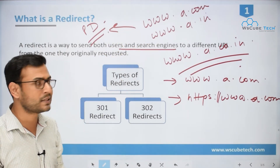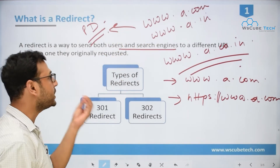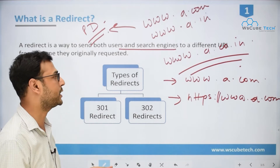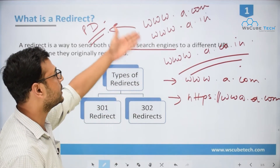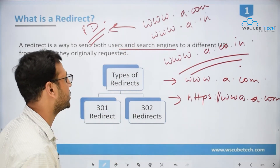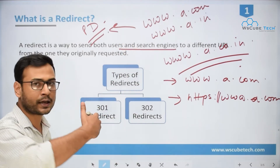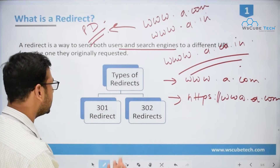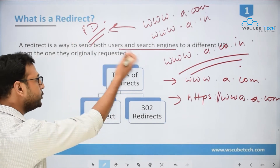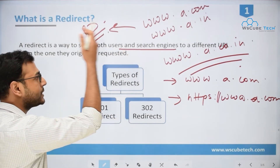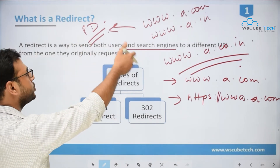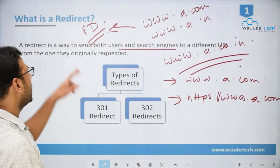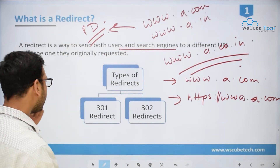If we talk about the basic definition of what a redirect or the process of redirection is — it basically moves or sends users as well as search engines to a different URL from the one originally requested.